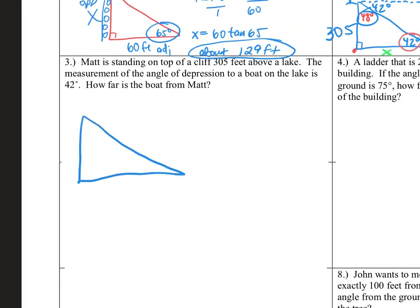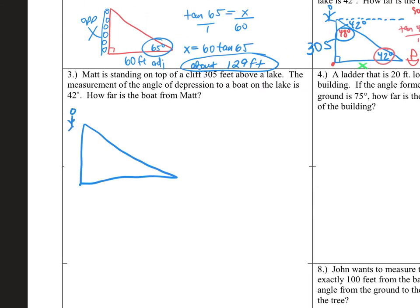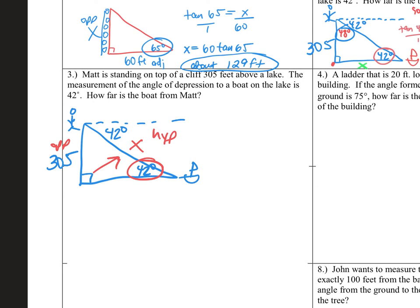Now we have Matt again — he's still standing on the same cliff, so we still have 305 over here. The angle of depression is still 42, so I'm going to put it down here on the inside of my triangle as my elevation. It says how far is Matt from the boat? What are we looking for? The hypotenuse — that is the length from the boat to Matt. In regards to 42, what is 305? Opposite. And what is X? The hypotenuse — always the longest side across from the right angle. So what trig function uses opposite and hypotenuse? Sine.